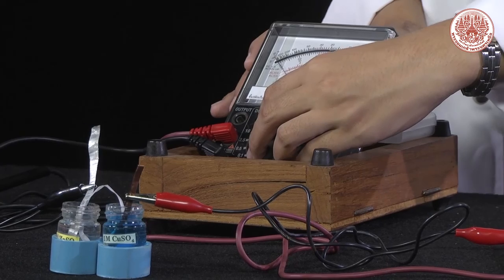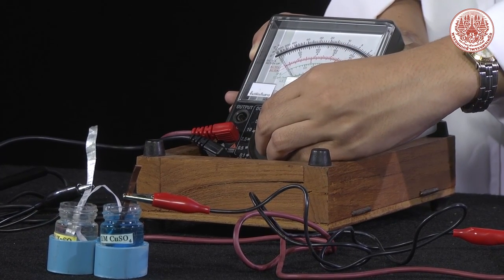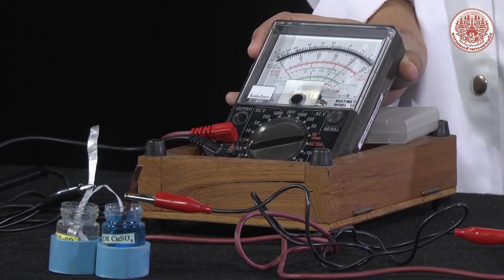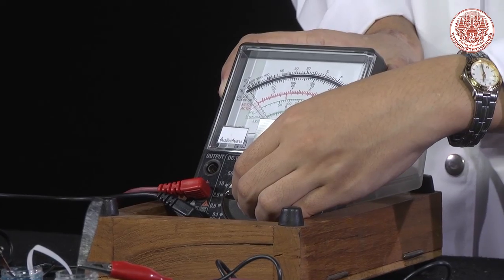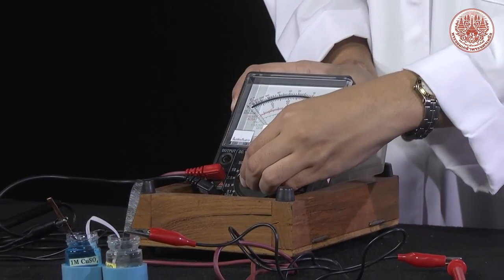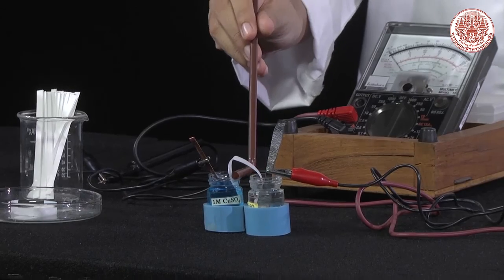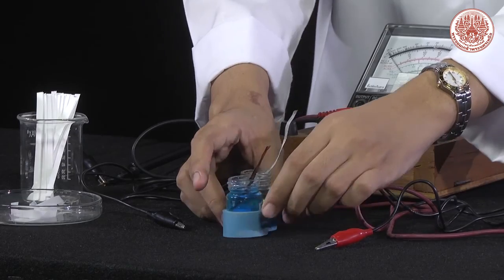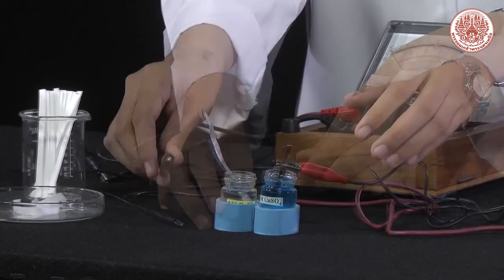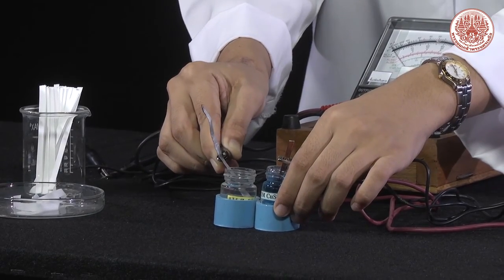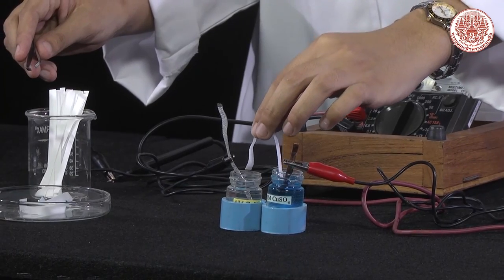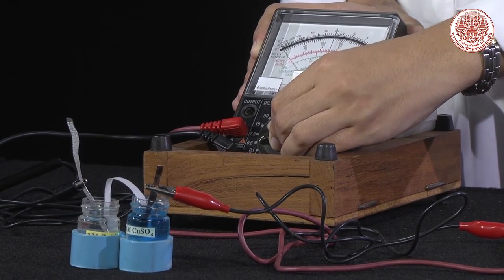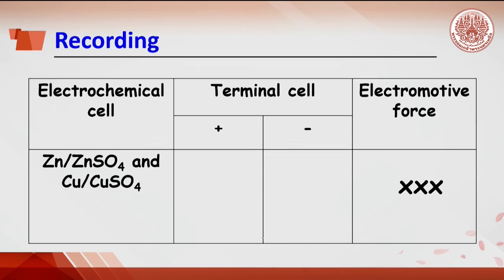Turn the selector knob from 1000 down step by step until the meter scale moves to the right about half of the full scale. Record the voltage according to the selector knob. If a negative voltage is displayed, switch the terminals by turning off the multimeter, discarding the salt bridge, and disconnecting the electrodes. Switch the solution connections, then reconnect the electrodes. Place the salt bridge across the two half cells. Start turning the selector knob until voltage can be read. Note that not only voltage is recorded, but electrode terminals are also recorded.